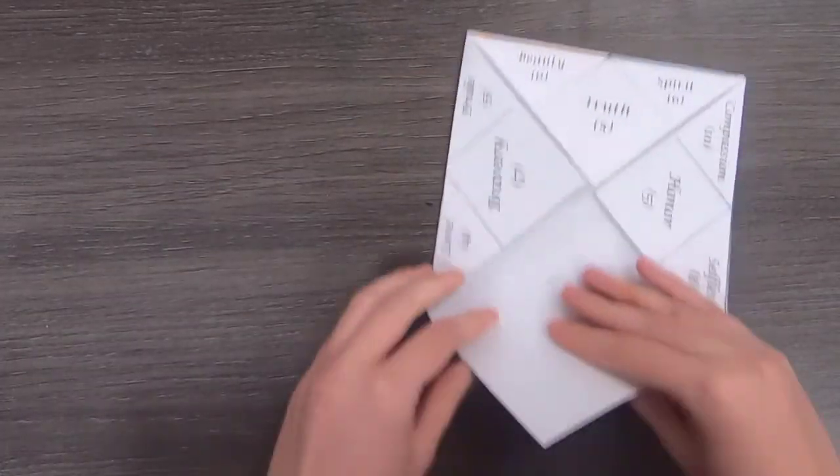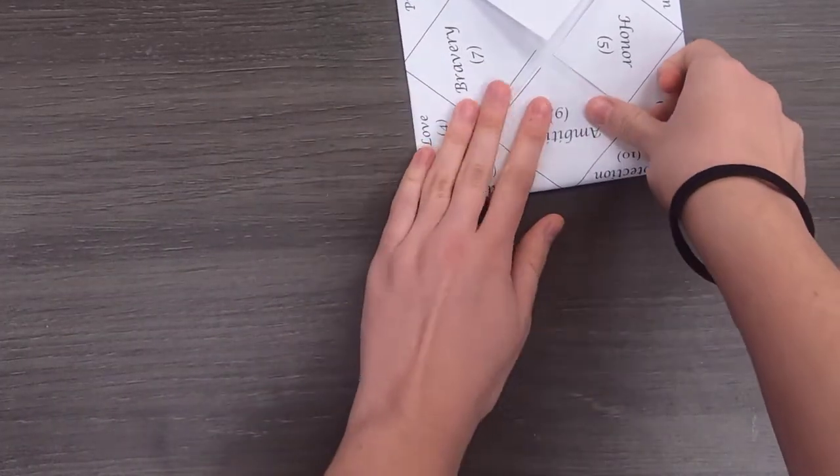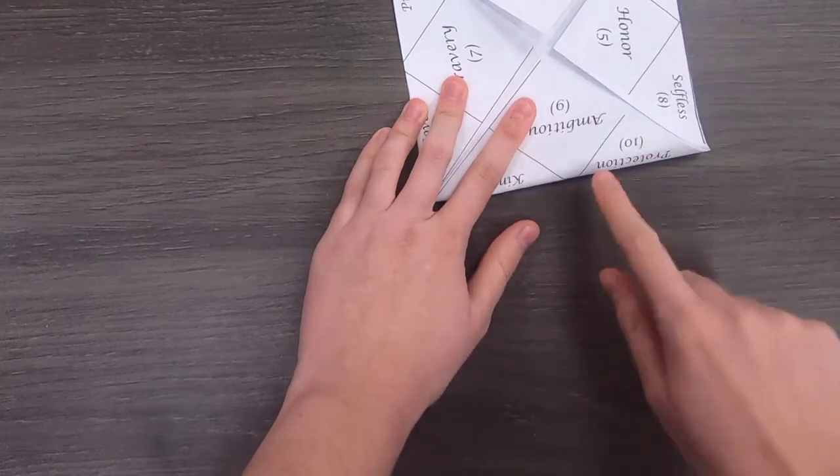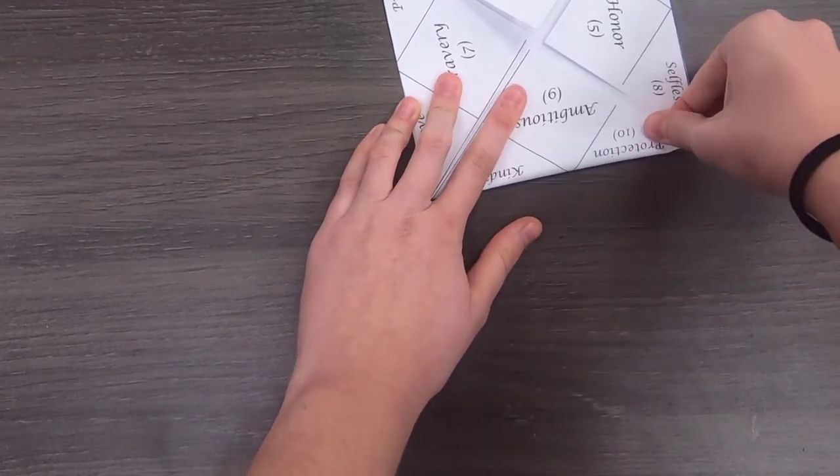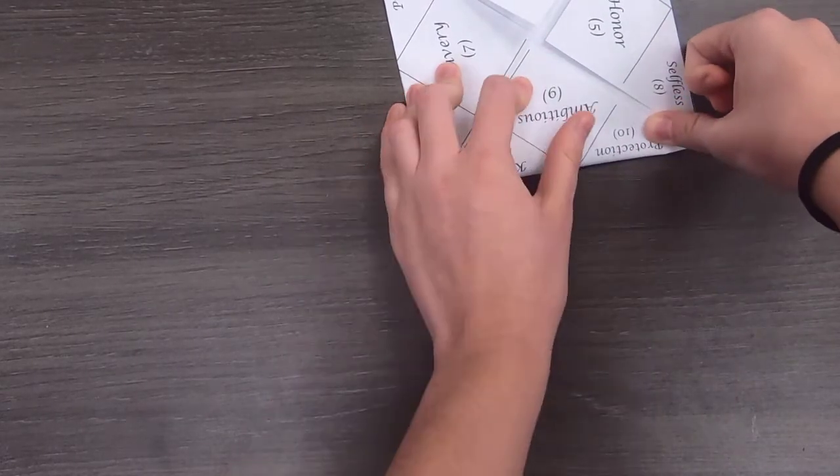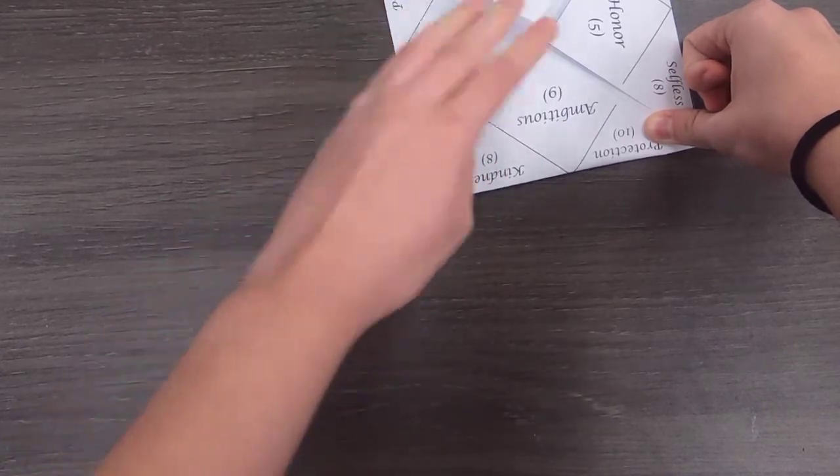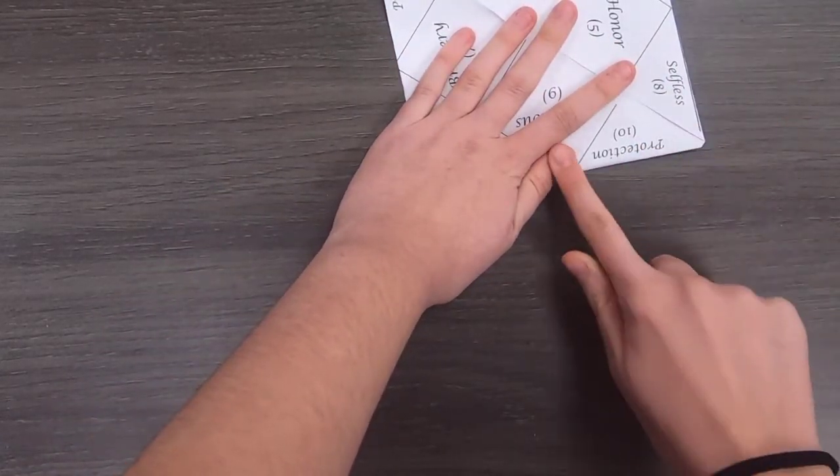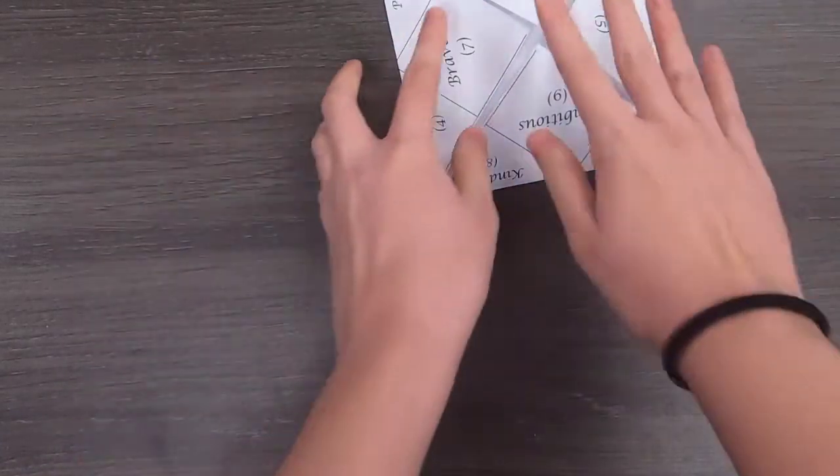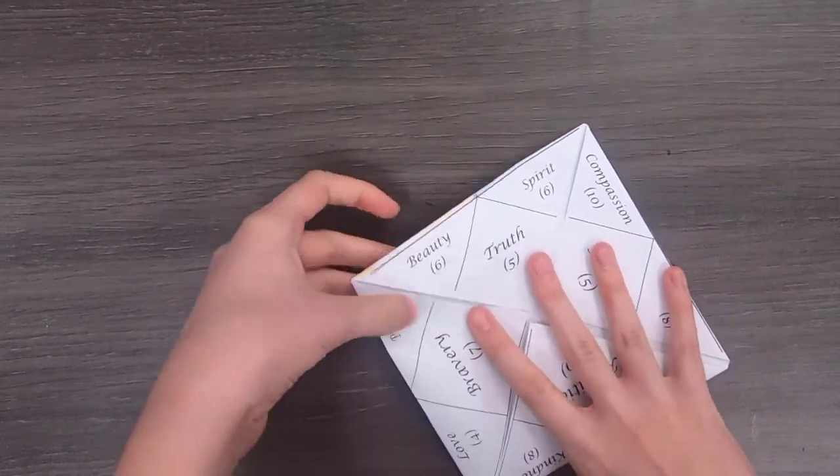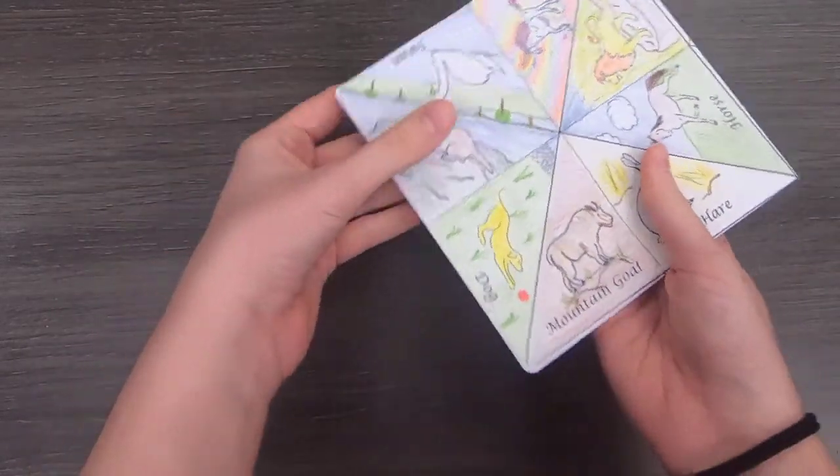And then we take the last corner and fold it like this, so it should be like a smaller square once all is said and done. So fold it there and crease it there. Awesome. And now we are going to flip it over again.